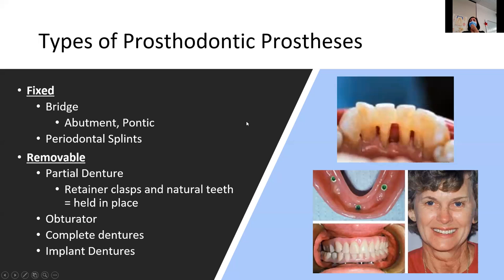Then you have removable — you can have a partial denture, which will have some kind of polymer plastic with either metal hooks or all plastic polymer to hold it in place. Then there's the obturator, like we talked about for oral cancer or facial cleft. Complete dentures are full arch — full palatal, full mandibular arch. And then you have implant-retained dentures.